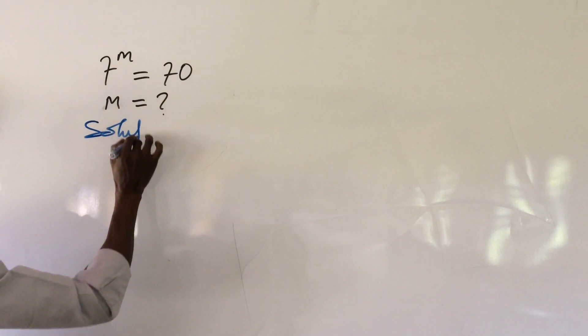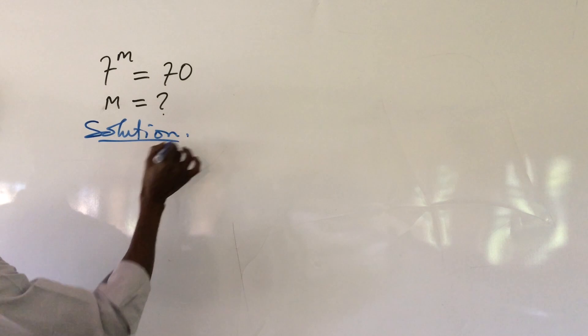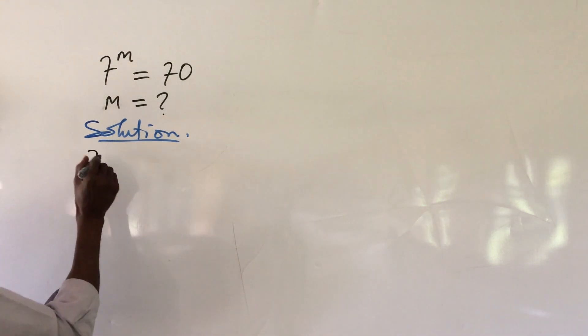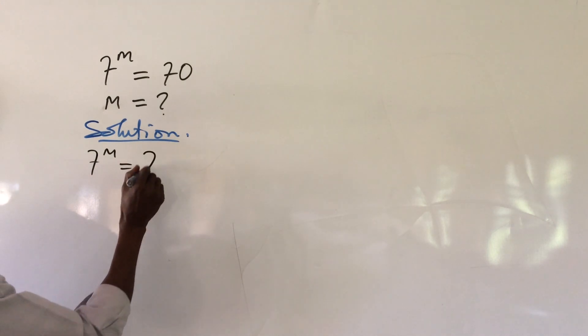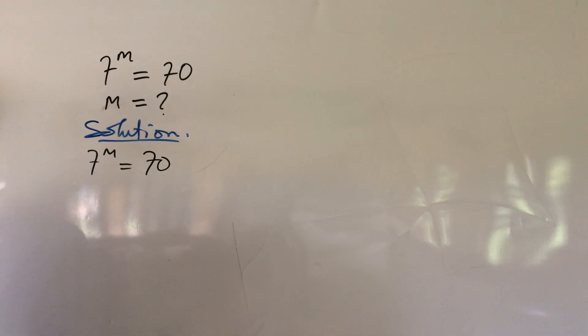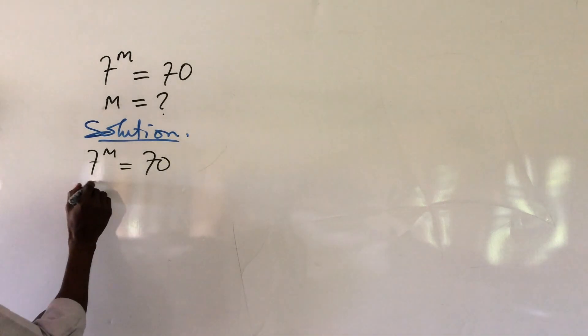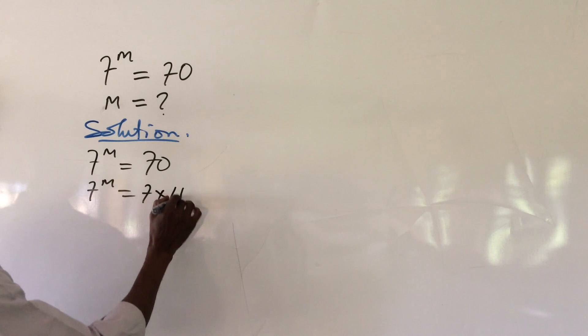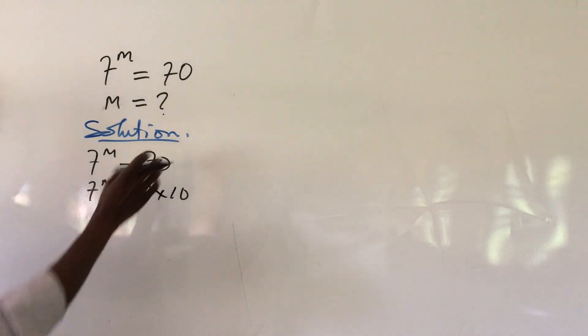Solution. We put down our question, which is 7 to the power of m equal to 70. Now, we can split this 70 into 7 times 10. So we have this to be 7 times 10. This is the same thing as this.